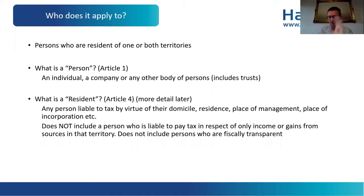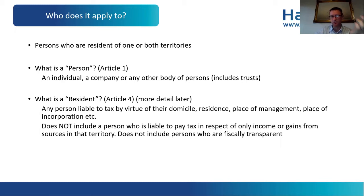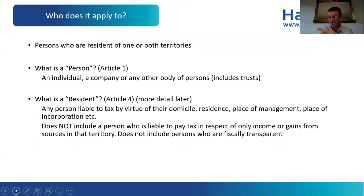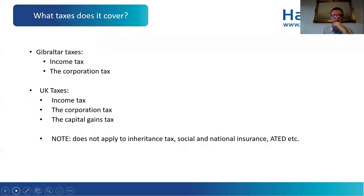The definition does not include a person who is liable to pay tax only in respect of income or gains from sources in that territory — that's aimed at permanent establishments. It also does not include fiscally transparent persons. So you can qualify as a person under Article 1 but if you are fiscally transparent — for example, a general partnership or unincorporated association — you would be a person for Article 1 but not resident for Article 4. A general partnership cannot access treaty benefits. A limited liability partnership is also essentially transparent.